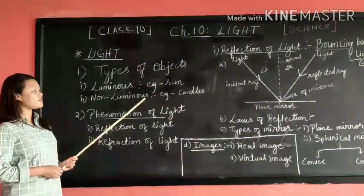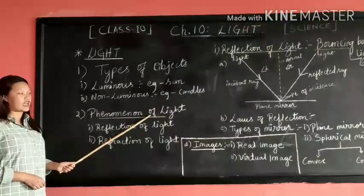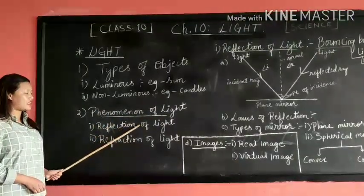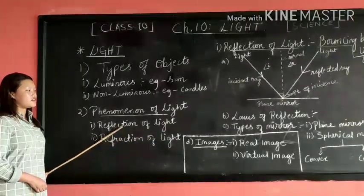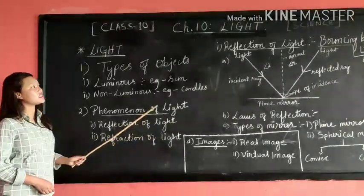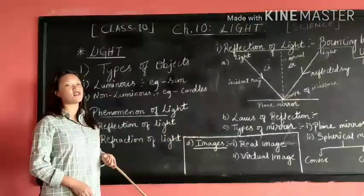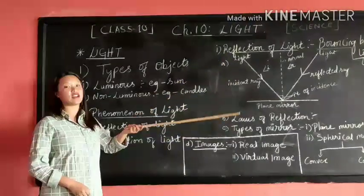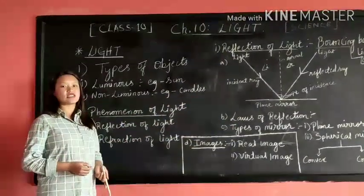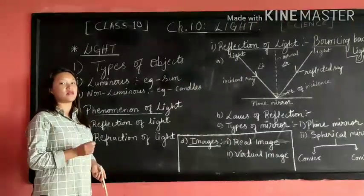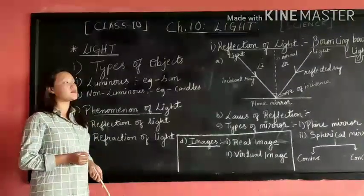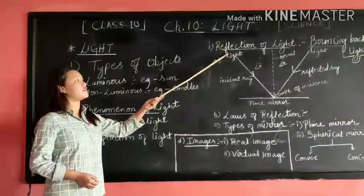Next we have two phenomena of light. First one is reflection of light and refraction of light. Today I will be explaining about reflection of light. Let us see what is reflection of light or what is meant by reflection of light. When a beam of light passes through the medium, it strikes on the smooth surface and bounces back to the same medium. That is known as reflection of light.